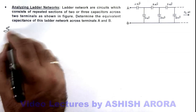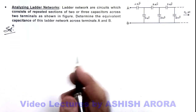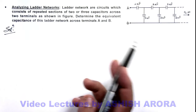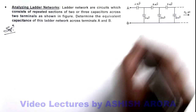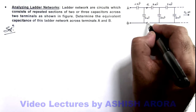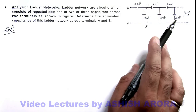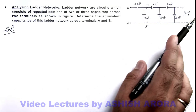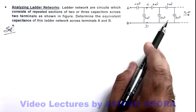The simplest way to analyze such ladder networks is to replace all the network capacitors by a single equivalent capacitance, removing one section out of it. We mark 2 terminals C and D. The network across terminals C and D is exactly the same as across A and B, because it extends to infinity. So if we remove one section from the infinite sections, it won't make any effect on the equivalent capacitance.